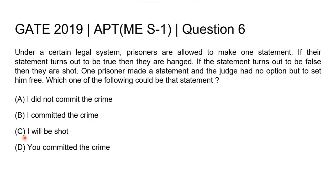In option C, the prisoner says 'I will be shot.' This is a clever answer. If the judge assumes that this statement is true, then according to the law, the prisoner has to be hanged. But if the prisoner is hanged, then the statement that the prisoner will be shot becomes false.